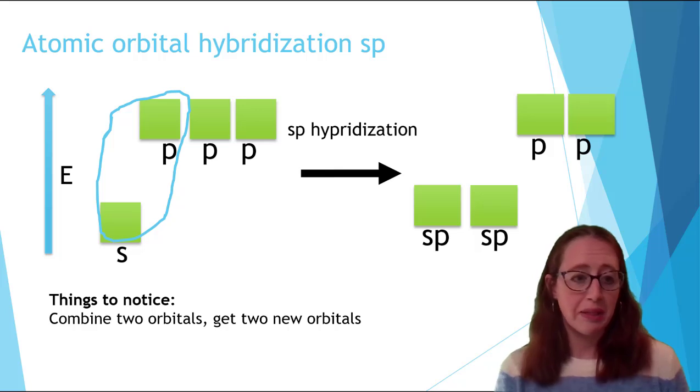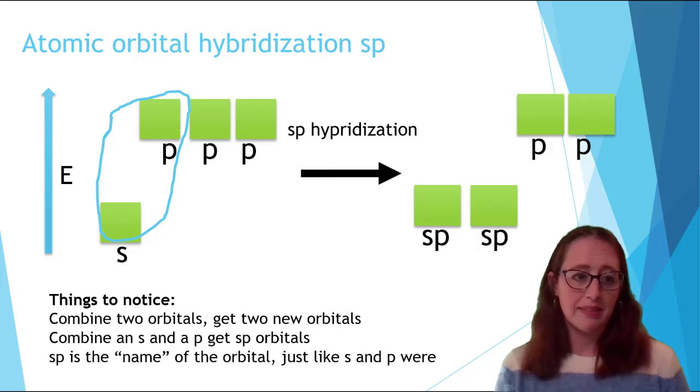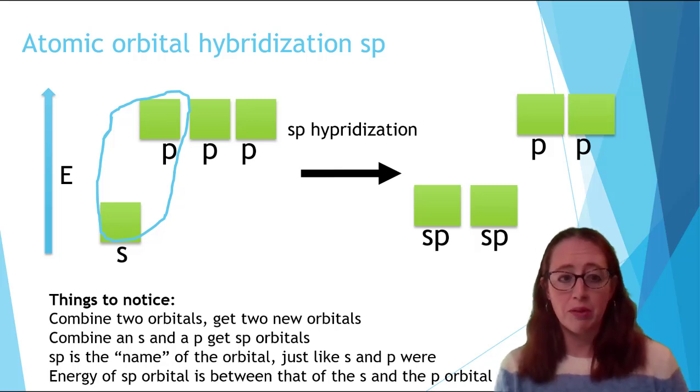So things to notice. We combine two orbitals, we get two new orbitals. We combine an S and a P to get SP orbitals. SP is the name of the orbital, just like S and P were. Energy of the SP orbital is between that of the S and the P orbital.